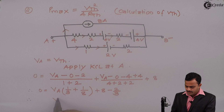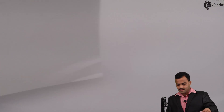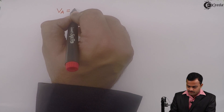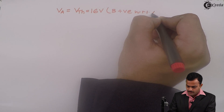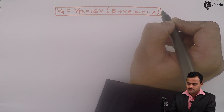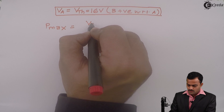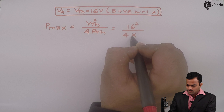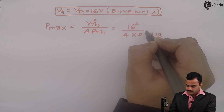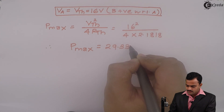Solving for V_A, I get V_A as minus 16 volt. The minus sign means the polarity needs to be changed. So V_A = VTH = 16 volt, with B positive with respect to A. Now I have VTH and RTH. Maximum power transfer is VTH squared upon 4 RTH = 16 squared divided by 4 multiplied by 2.1818 = 29.3336 Watt.